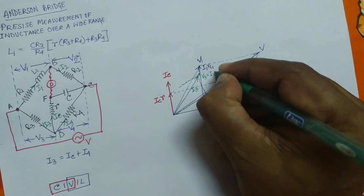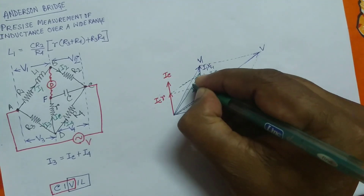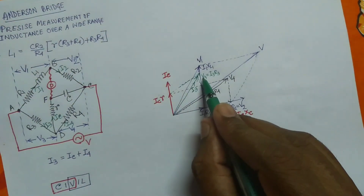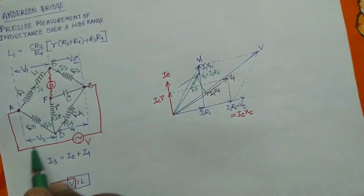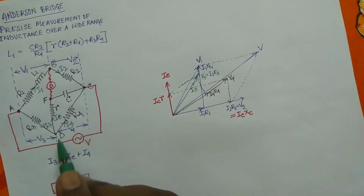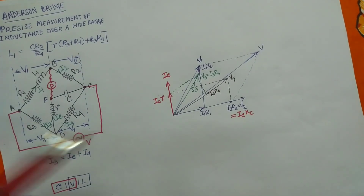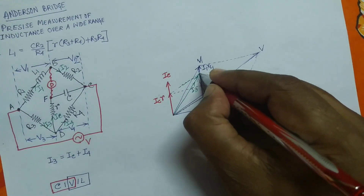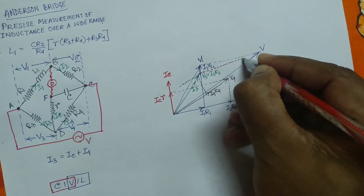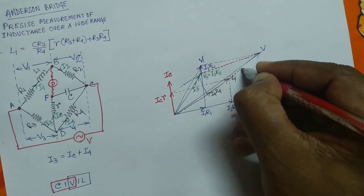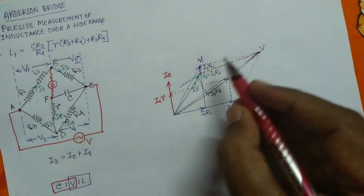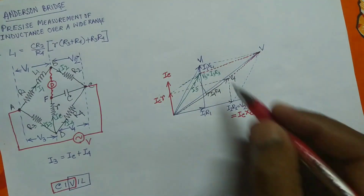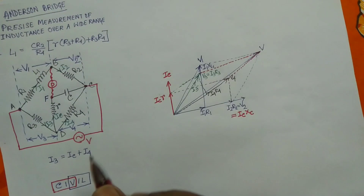The voltage drop across arm AD is V3, which equals I3·R3. Similarly, V4 equals I4·R4. The phasor addition of V3 and V4 also gives the total supply voltage V, consistent with the other path. This completes the phasor (vector) diagram of the Anderson bridge. Thank you very much.